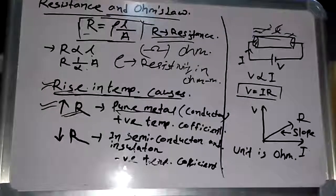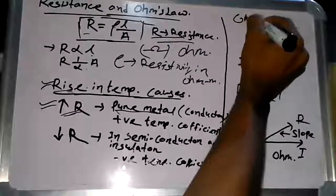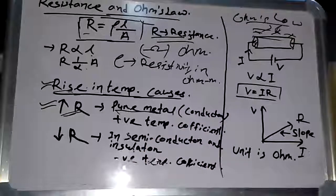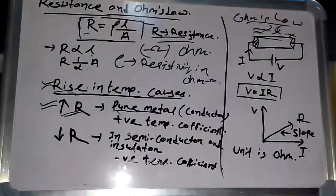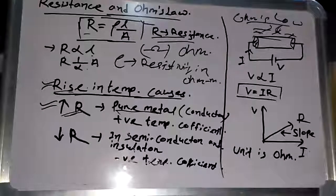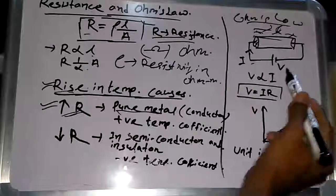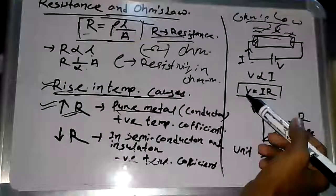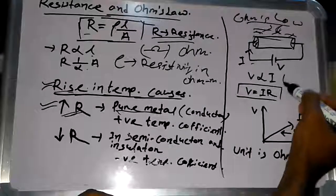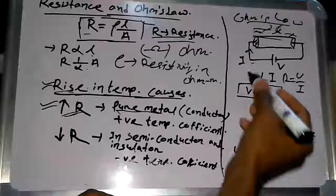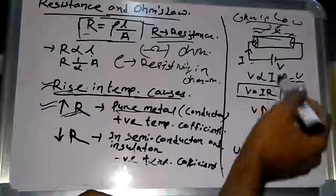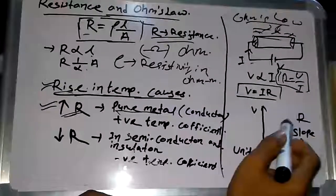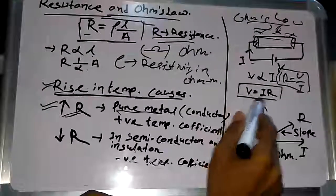Ohm's law is defined as follows: the ratio of potential difference of the conductor and the current flowing through it is constant, provided the temperature of the conductor does not change. That is, R = V/I. In other words, voltage V is directly proportional to current I, giving us V = I × R, where R is the constant resistance.